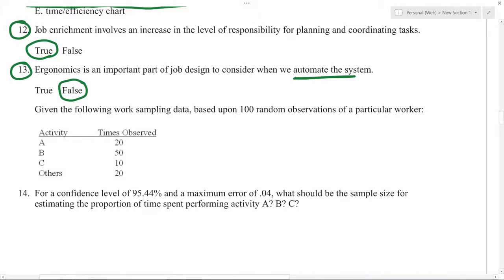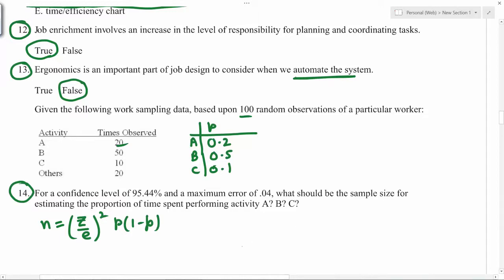What should be the sample size? For activities A, B, and C, the proportions based on what is given: 20 divided by 100 is 0.2. For B, proportion is 0.5, and this is 0.1. The formula that we use: sample size equals z over small e, whole square, times p times 1 minus p. Now, how to get z value? For that we have to make standard normal distribution chart. In this picture, this middle part is 95.44 percent - that's the confidence level 0.9544.